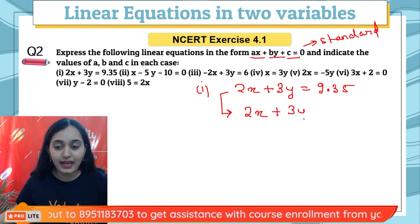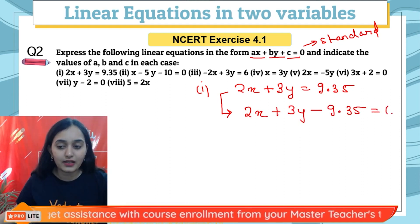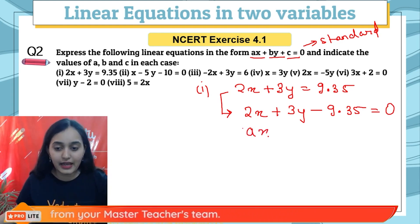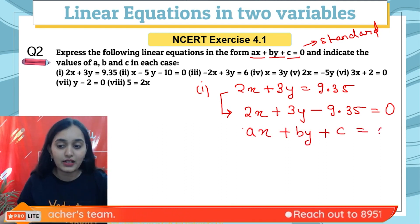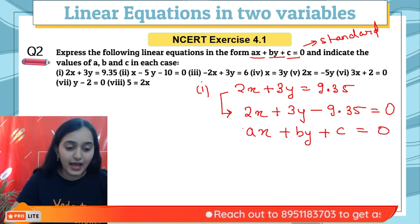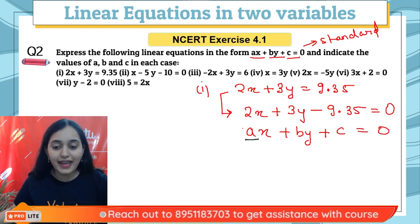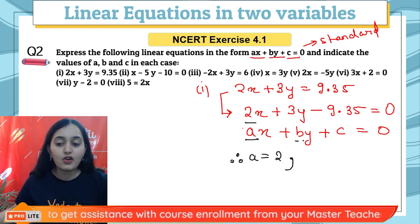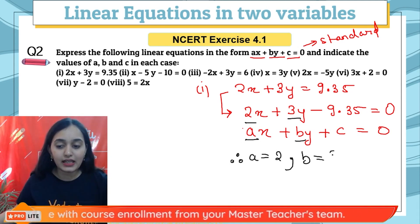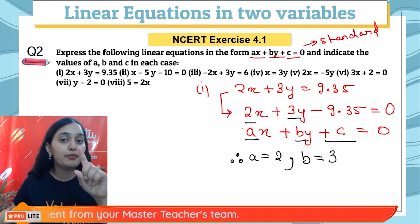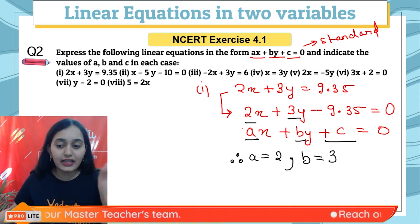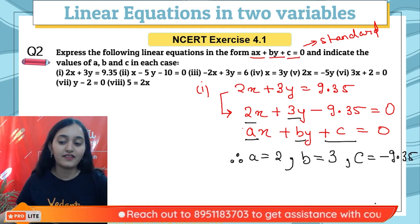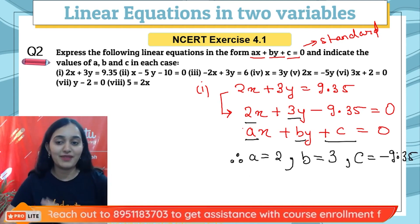2X + 3Y − 9.35 = 0. This is now in standard form. Equating with AX + BY + C = 0, the coefficient of X is 2, so A = 2. The coefficient of Y is 3, so B = 3. And the constant term is −9.35, so C = −9.35. That is the value of A, B, and C for the first part.